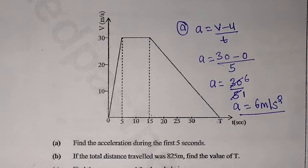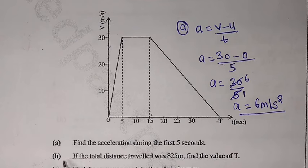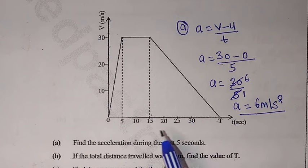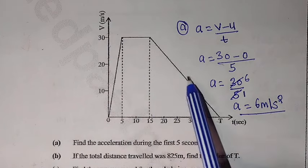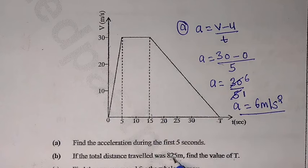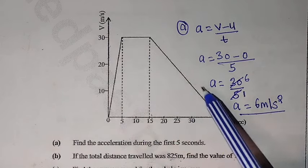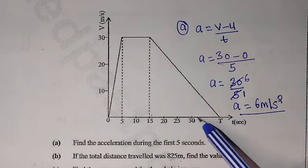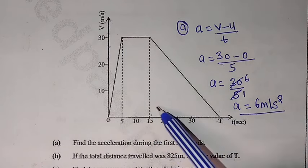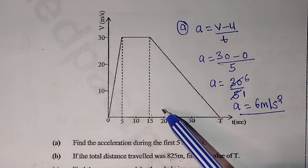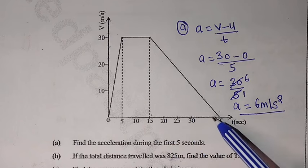Now for question B: if the total distance traveled was 825 meters, find the value of T. T represents the total time taken for the whole journey. When you look at this shape, it is a trapezium. The distance under the graph is the same as the area, so I am going to apply the formula for finding the area of a trapezium.